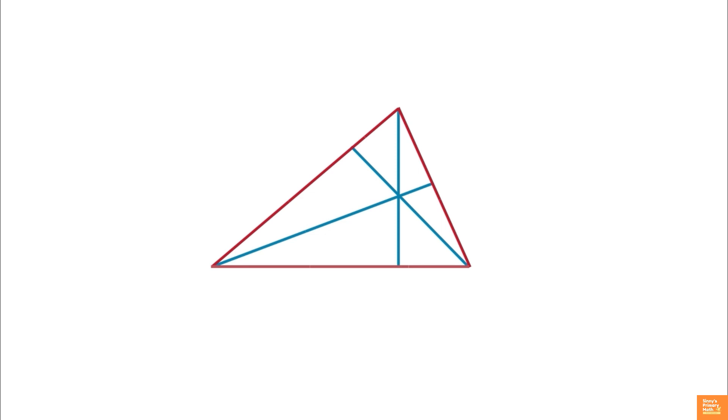The three altitudes intersect at a single point, called the orthocenter of the triangle. The position of the orthocenter may be inside or outside the triangle, depending on the types of triangles.